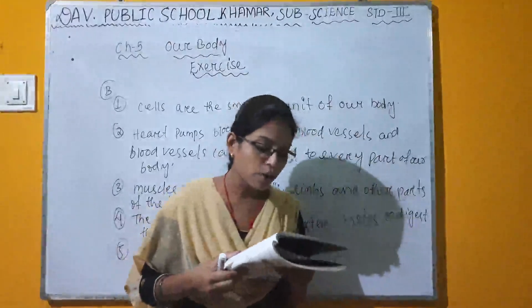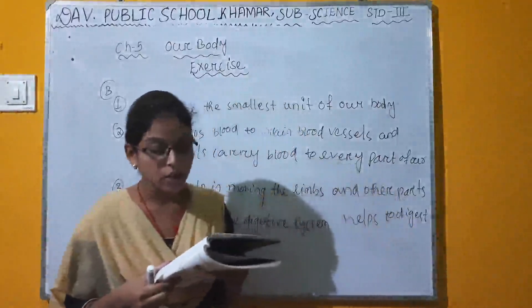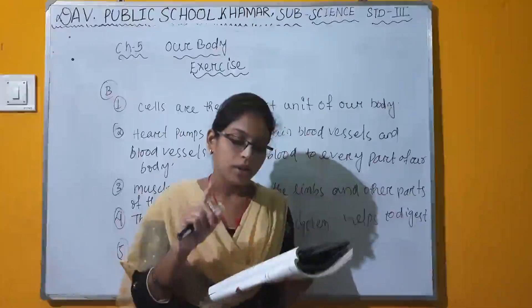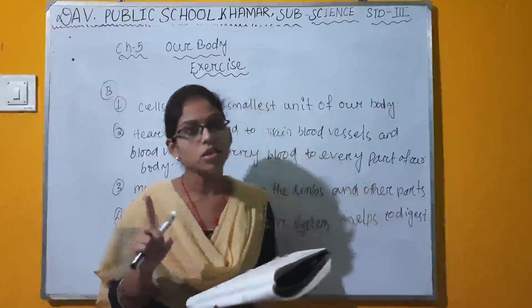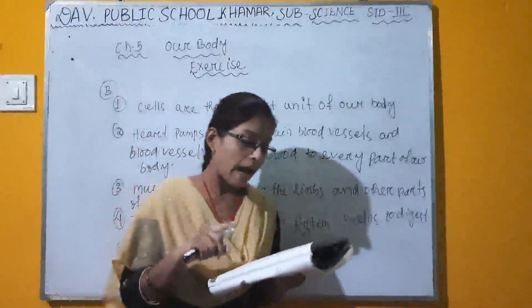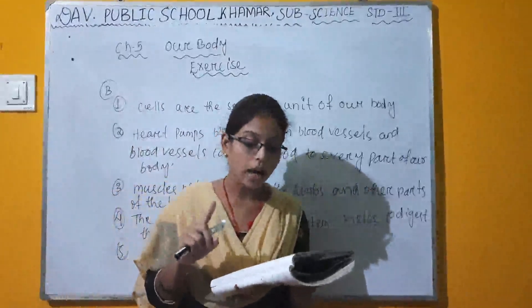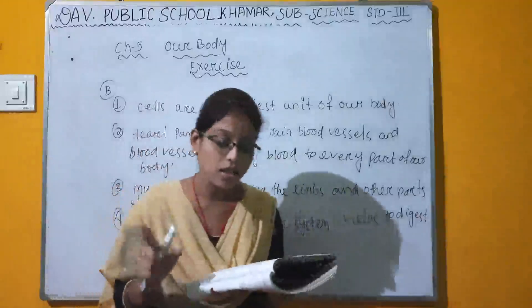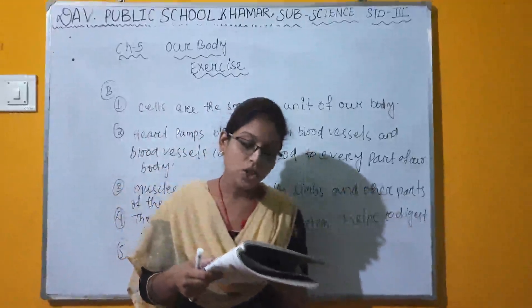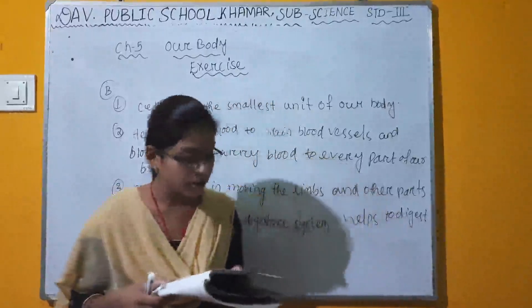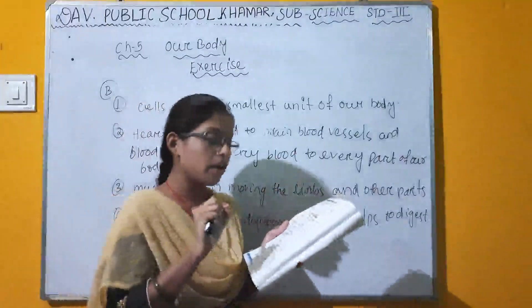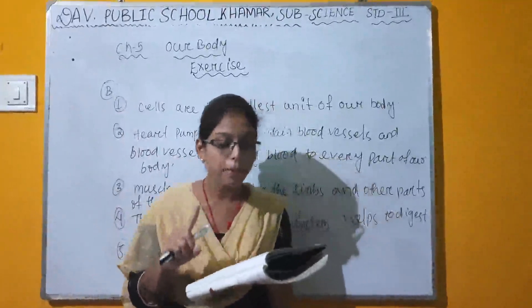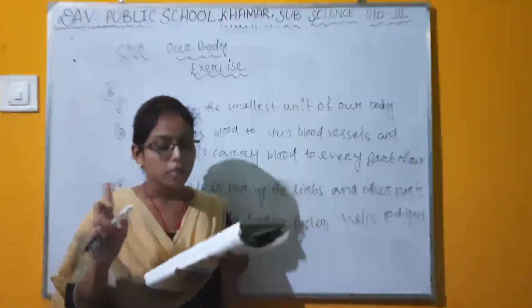Ear, nose, and tongue are our excretory organs — here 'excretory' is the underlined wrong word. The correct answer is: ear, nose, and tongue are our sense organs. The nervous system comprises the heart, blood, and blood vessels — the correct answer replaces 'nervous' with circulatory system.